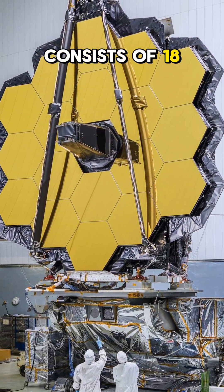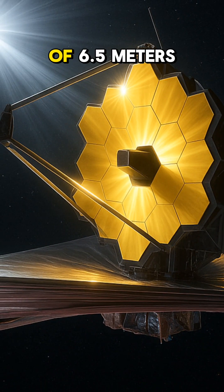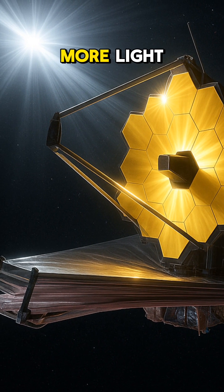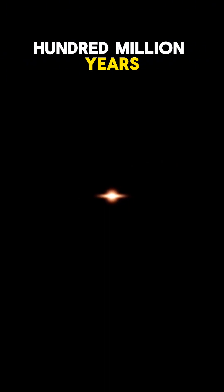Its main mirror consists of 18 hexagonal honeycomb segments made of ultra-thin titanium glass that is coated with gold. With a diameter of 6.5 meters, it allows the telescope to collect more light and detect faint galaxies that are over 13 billion light-years away, or around a couple hundred million years after the Big Bang.